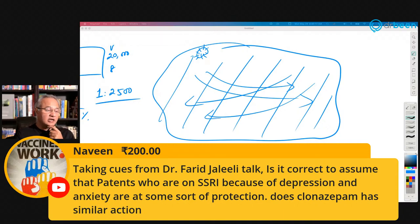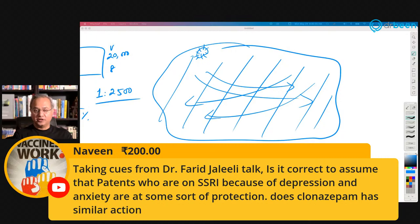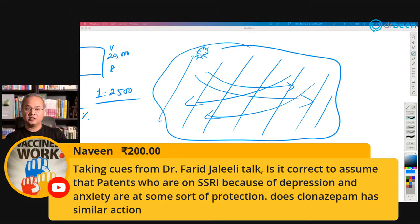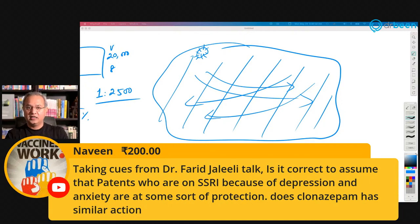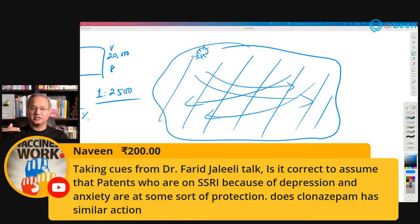Naveen asks, taking cues from Dr. Farid Jalali, whether patients on SSRIs for depression or anxiety have some protection, and whether clonazepam has a similar action. As long as something being used would reduce serotonin or histamine overactivity, these substances are somewhat protective. Our point is not to suppress a chemical but to bring it back toward normal if it is overly active. Catching the infection is still possible, but if the immune system becomes runaway, such drugs may control that. For clonazepam, look at its mechanism of action — if it reduces serotonin and histamine production, then it should provide some benefit.